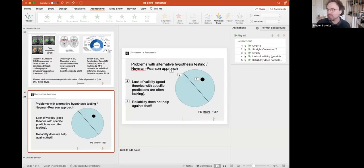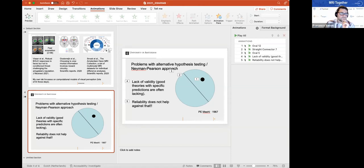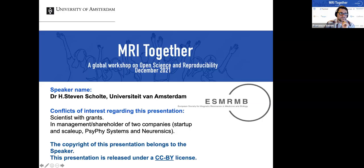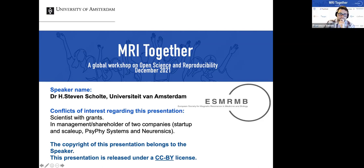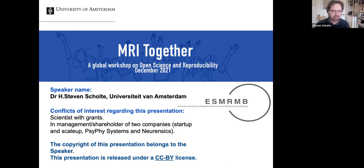Yes, thank you. My name is Steven Scholt, from the University of Amsterdam. Conflicts of interest: I am a scientist, so I want to be cited, I have grants, and I need things to get those grants — that's a big conflict of interest. I have also started two companies from the university, a startup and a scale-up. I'm happy to have this presentation released under the CC-BY license. I teach neuroimaging, scientific reasoning, and cognitive AI.